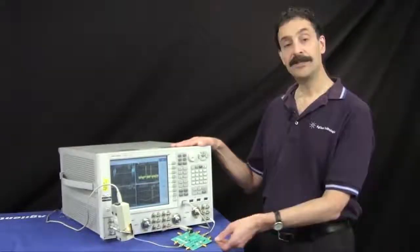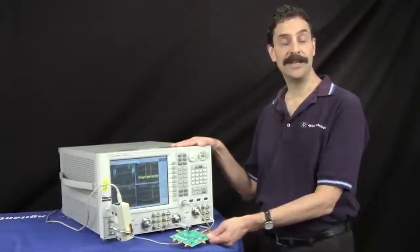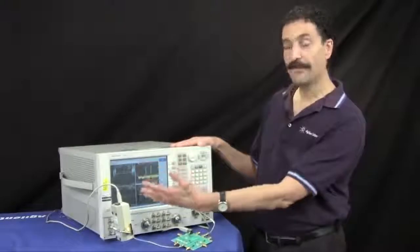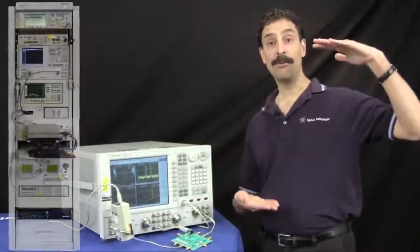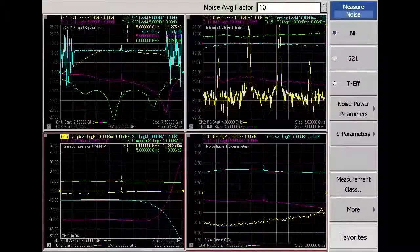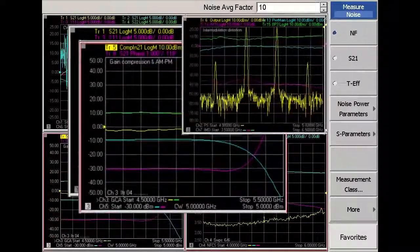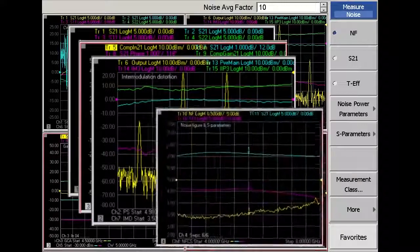With a single set of connections to a device under test, or DUT, the PNAX is capable of performing many RF tests that used to take a rack of test equipment. Measurements include S-Parameters, gain compression, intermodulation distortion, and noise figure.